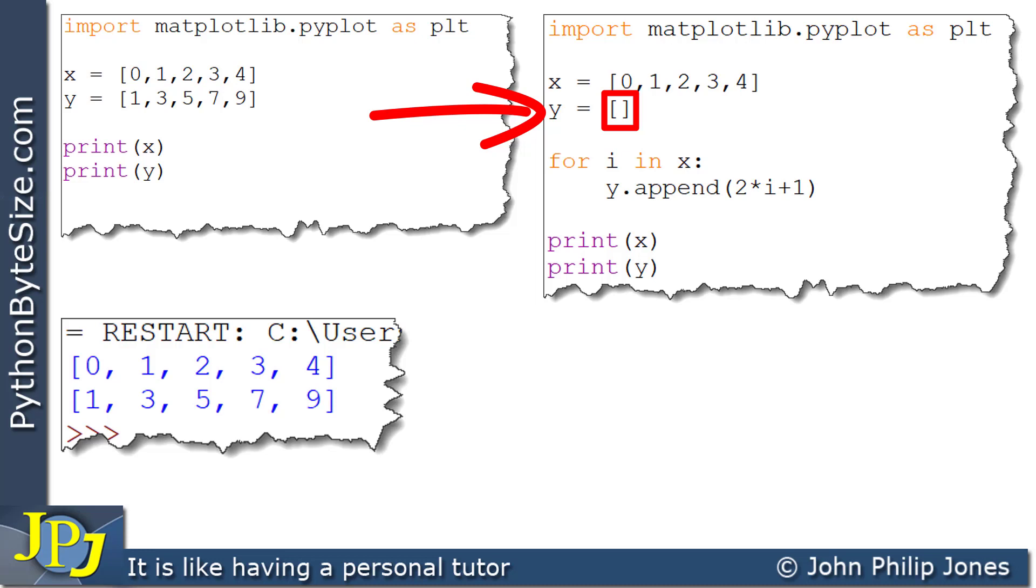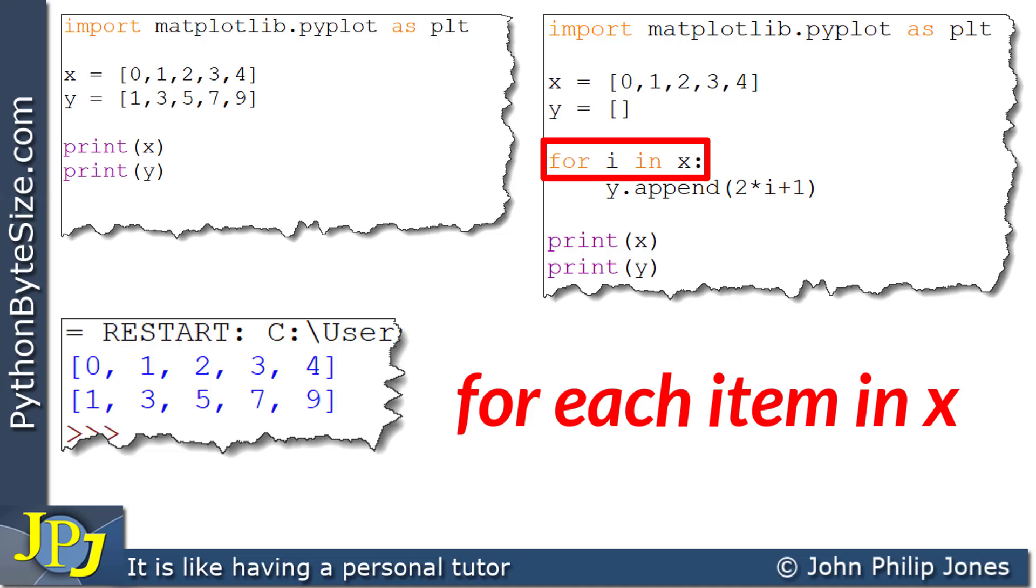Now, what I've got to do is to fill it up with values that are based upon the items that are in the Python list x. And I'm going to achieve that using a for loop, as you can see here, which says for i in x. i is an abbreviation that I always use for item. So I like to read for i in x as for each item in x.